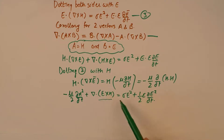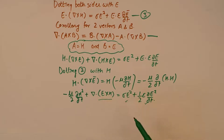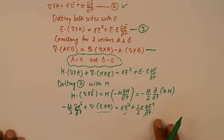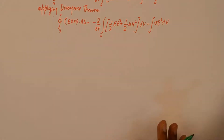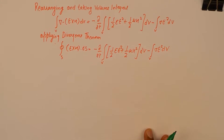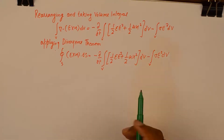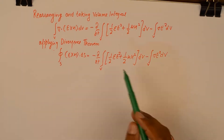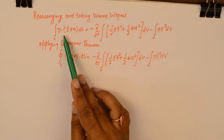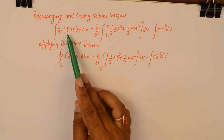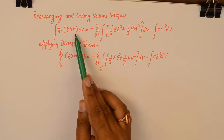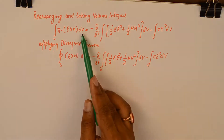E cross H has featured in this equation along with a few other terms. We will rearrange these terms and then find the physical interpretation. For the sake of clarity, I have already rearranged and taken the volume integral of the equation I just showed you, so on the left hand side I am only left with the divergence of E cross H over a volume.